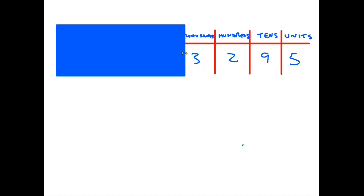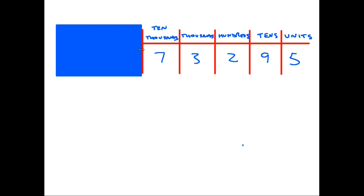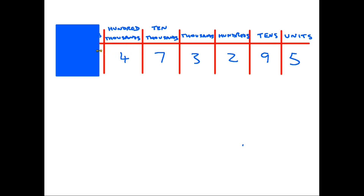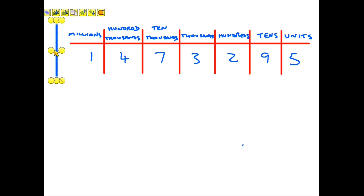Following exactly the same logic, if you say the next group of digits out loud you get 3,295, so the three must be the thousands. You then have ten thousands — that would be 73,295 — and hundred thousands, giving 473,295.